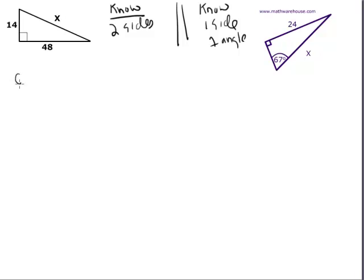You just set up the Pythagorean theorem and substitute in. Remember C is the hypotenuse. So we're going to say 14² + 48² = x². And we're going to solve for x.